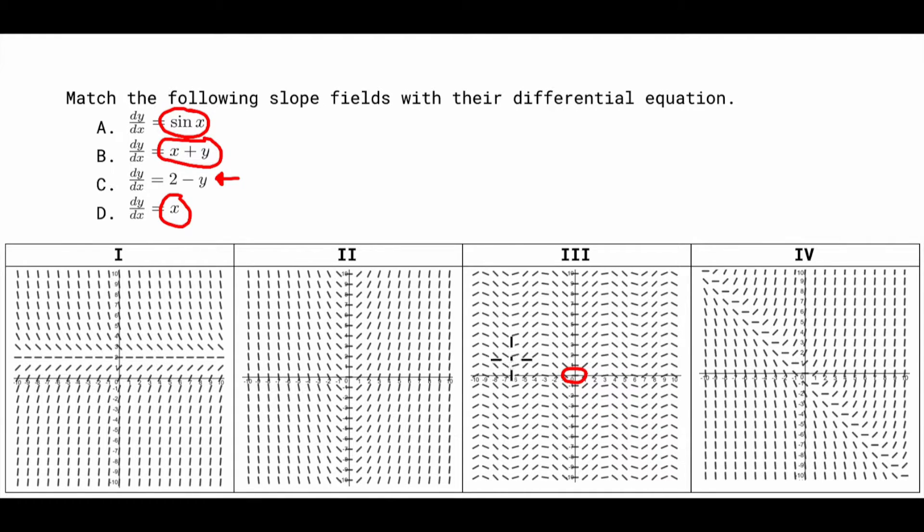Put 0 in. Also it's going up and down like a trig function would be. So this first one is going to match up with that one. So this Roman numeral III should be A.